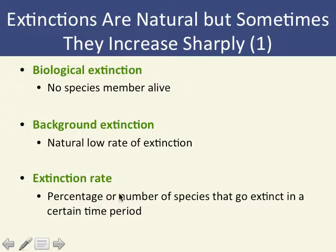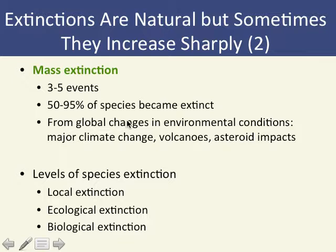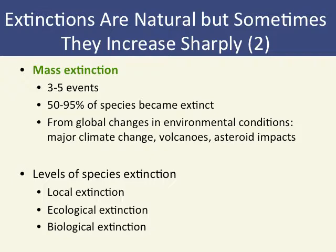The extinction rate refers to how many species are going extinct per year, and from that we can extrapolate how fast species will go extinct over the next hundred years. In the past there have been approximately five mass extinction events. Right now, many biologists say we are currently in the sixth mass extinction, because human activities have pushed the species extinction rate high enough to qualify as an extinction event, though we won't see the full evidence for a couple hundred years.